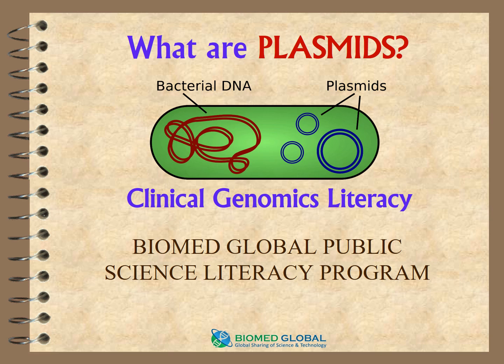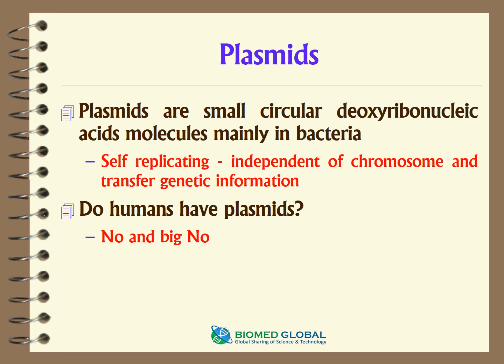In this presentation we will talk about what plasmids are. Plasmids are small circular deoxyribonucleic acid molecules found mainly in bacteria. They are self-replicating, independent of the chromosome, and are involved in the transfer of genetic information.